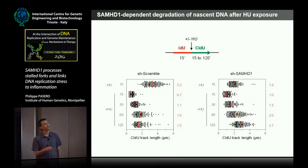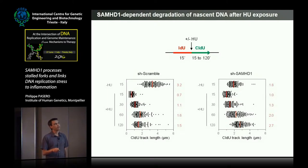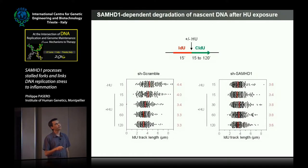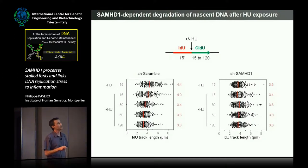Looking at the CldU track, in control cells when we add HU there is a very sharp reduction of fork speed as expected, and then the fork keeps moving at a very slow pace. In SAMHD1-depleted cells, this fork is slower to start with, but in the presence of hydroxyurea it's actually moving faster than control cells. Looking specifically at the IdU label — the track labeled before drug addition — this IdU track in control cells gets gradually shorter over time, whereas it remains the same in SAMHD1-depleted cells.